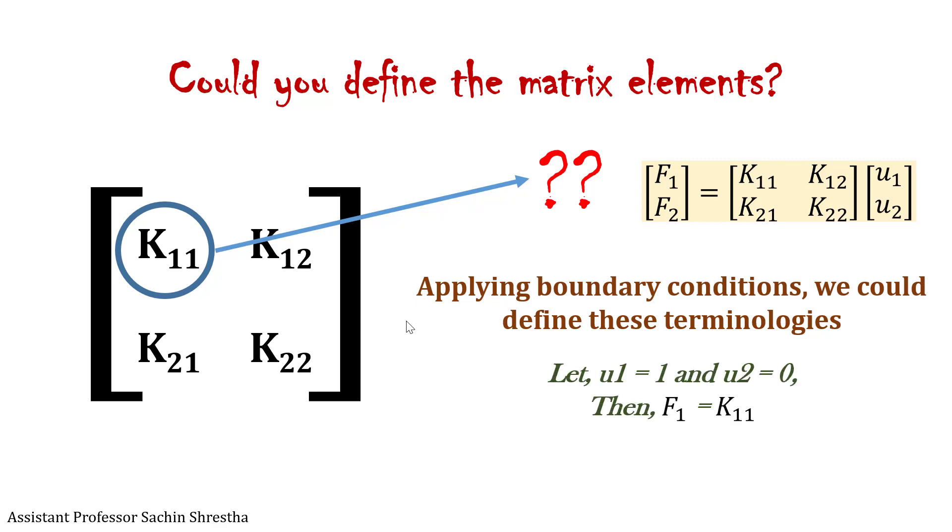Let displacement at node 1, U1, equal 1, and U2 equal 0. Applying this boundary condition, we will have F1 is equivalent to K11. Based on this, we can define K11 as the amount of force to be applied at node 1 which will result in unit displacement in node 1 and zero displacement in node 2.